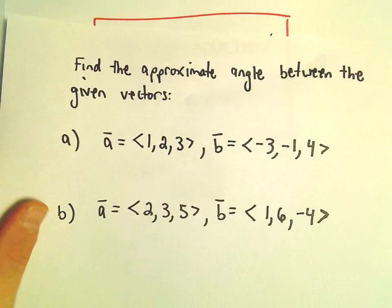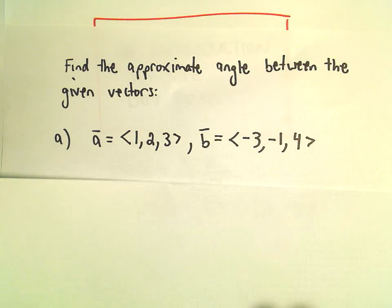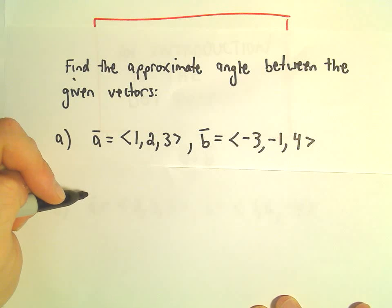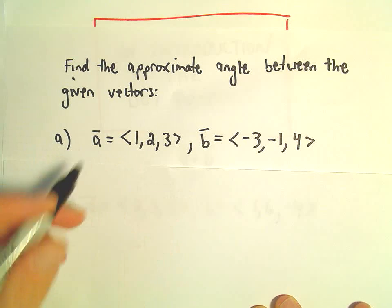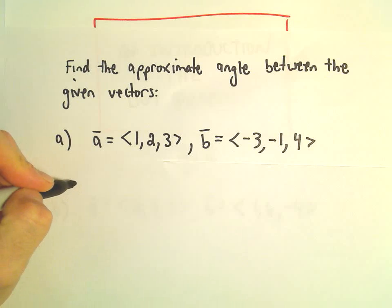So what we're going to do is find some angles between some vectors. So in part a we've got vector 1, 2, 3. Vector b is negative 3, negative 1 comma 4. So we'll figure out the angle by using, again, our little formula. So a couple of things here.